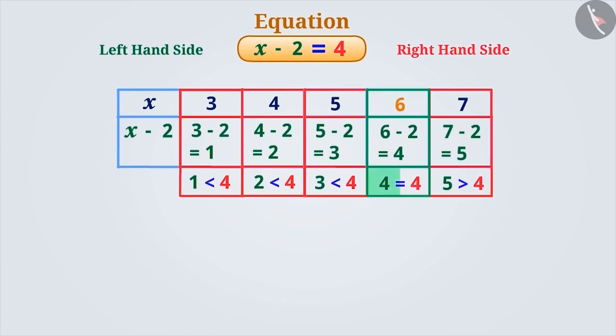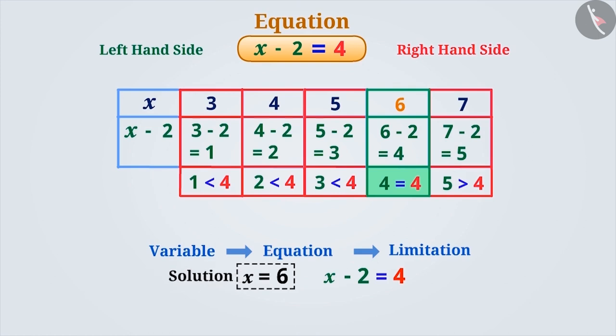What do we understand from this? The equation is satisfied for the given value of the variable. The fixed value of the variable with which the condition is satisfied is called the solution of the equation. The solution of this equation is x equals 6.